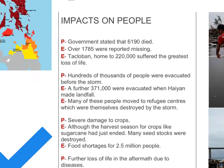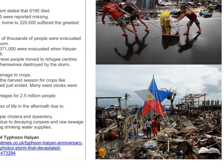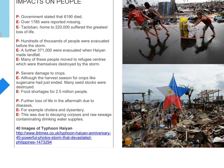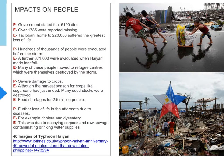The next impact on people was severe damage to crops. Although the harvest season had ended for crops like sugarcane, many seed stocks were destroyed, and that led to food shortages for 2.5 million people — that's the key figure. And lastly for impacts on people, there was further loss of life in the aftermath due to diseases, including cholera and dysentery, caused by decaying corpses and raw sewage contaminating drinking water supplies.